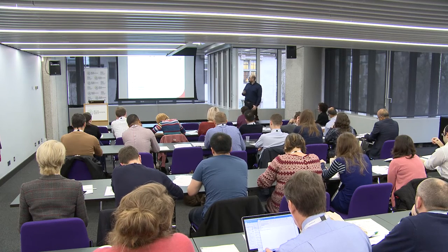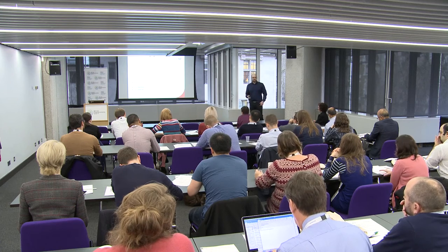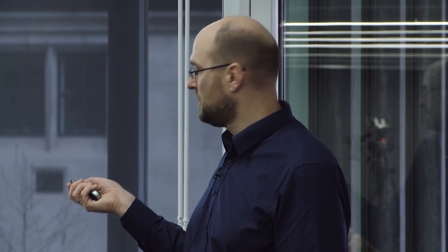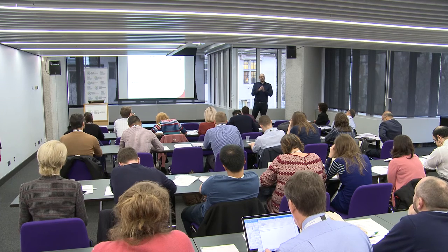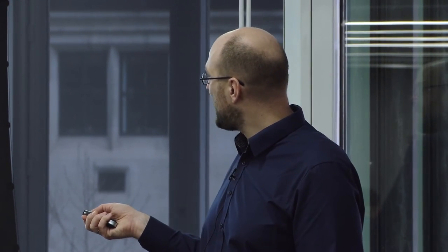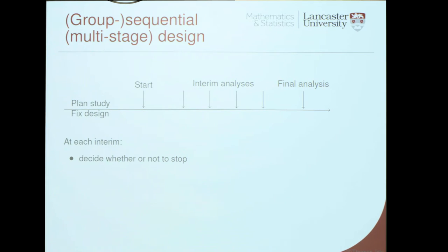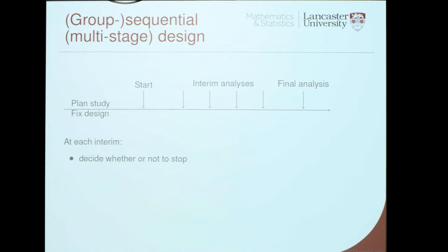Obviously there is no free lunch — we can't do that without some penalty. I already told you that if we ask the same question multiple times, which is exactly what we do here, we're going to have to adjust for multiple testing. The implication for the design is that the maximum sample size — if you happen to go all the way to the end — will be larger than a single stage design, no more than 10% typically. But the expected sample size, my average sample size if I were to run the trial over and over again, is notably smaller — up to 20 to 30% reduction is possible.